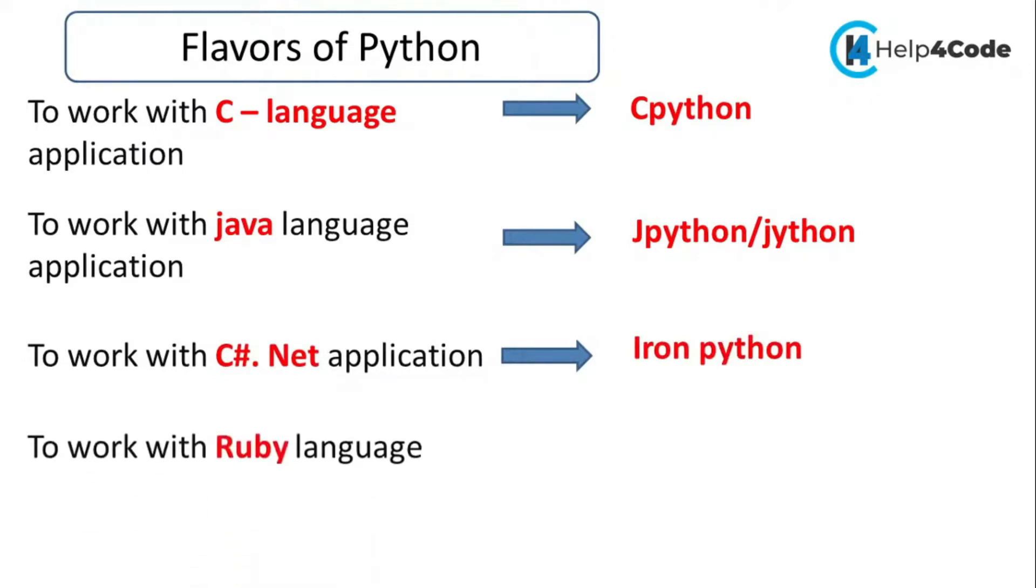If you want to work with the Ruby language, there is another language called Ruby on Rails. This is also a popular language. By using Ruby on Rails, we can develop web applications. So we have RubyPython.